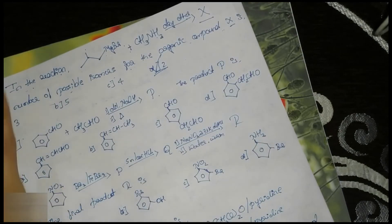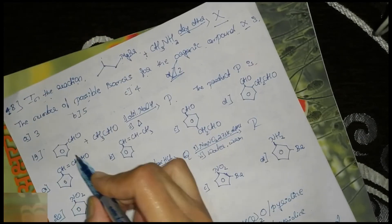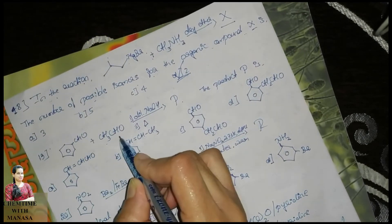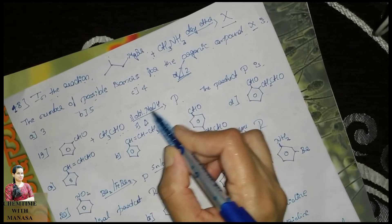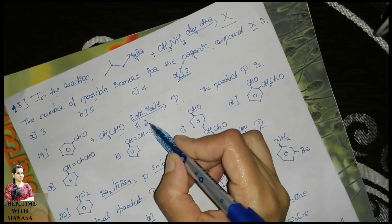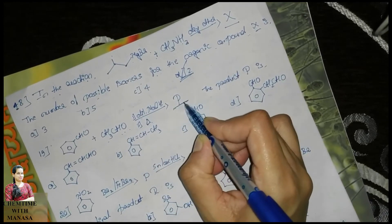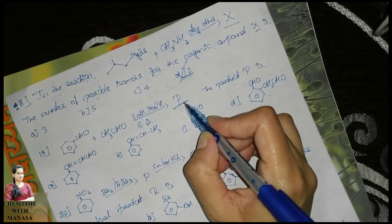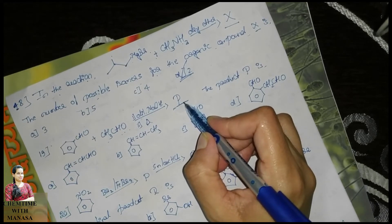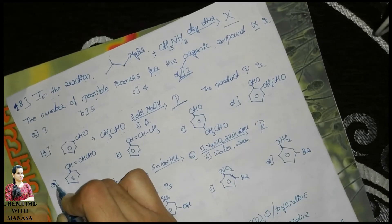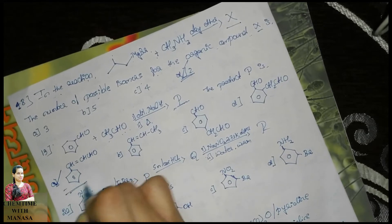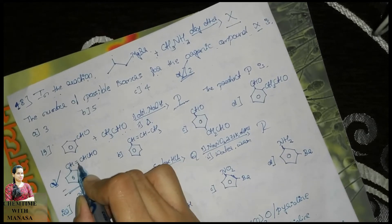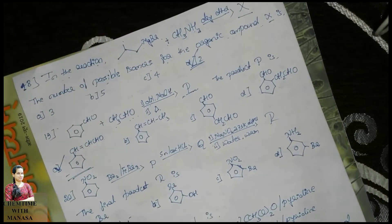Next: this is a simple cross-aldol reaction between benzaldehyde and CH3CHO. The product is cinnamaldehyde (C6H5-CH=CH-CHO). Option A is the answer.